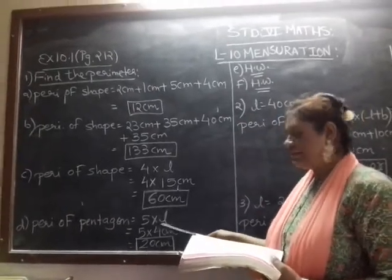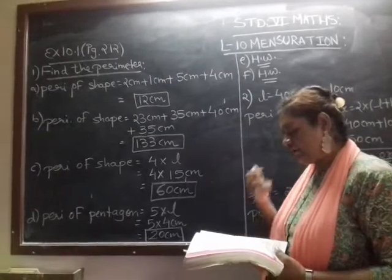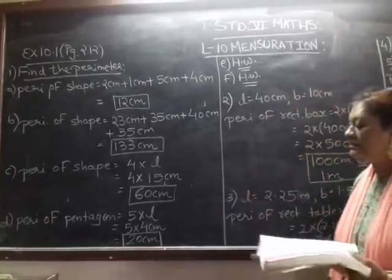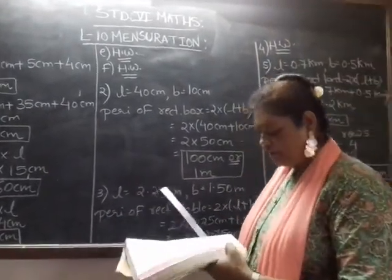Pentagon, this penta means 5. So pentagon is having 5 sides of equal measurement. So 5 into 4, that is 5L, 20 centimeter. Hopefully this is clear to you. E and F is your homework.